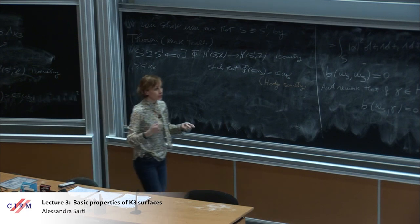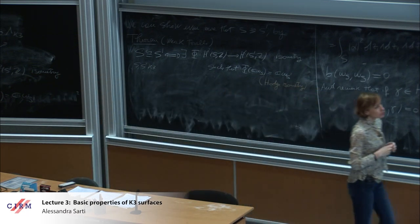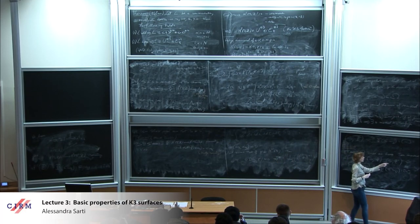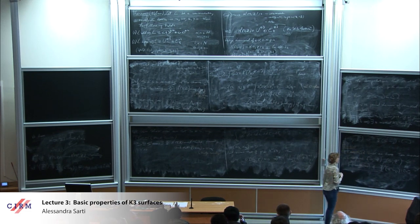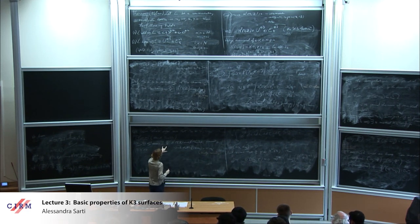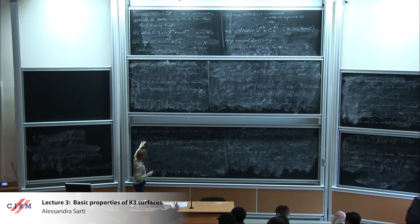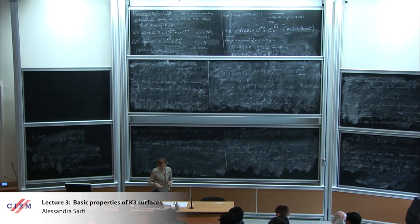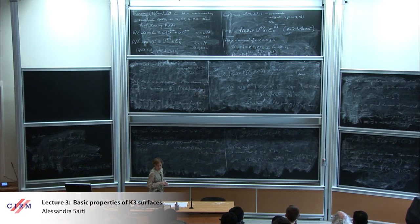I will also give the strong Torelli theorem. If you put some additional conditions on phi, you can establish an even more precise connection between the isomorphism and the isometry. But first let's do a remark: if one changes the marking on a K3 surface S — composing two markings — one gets an isometry of lambda_{K3}. So to parametrize K3 surfaces up to isometries, take the quotient of omega by O(lambda_{K3}).